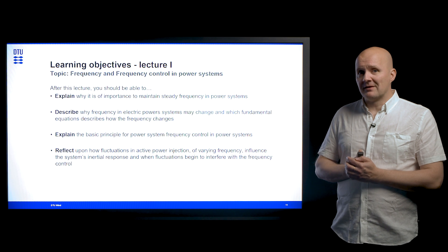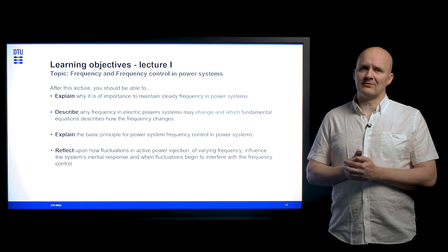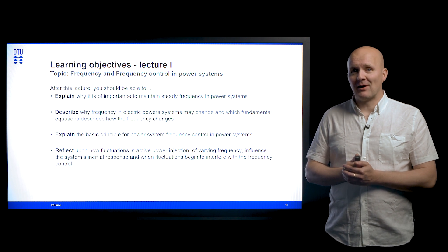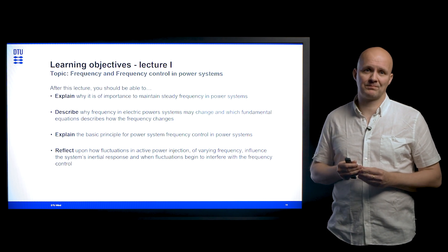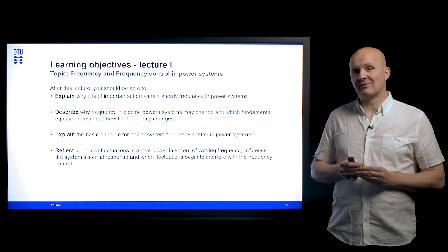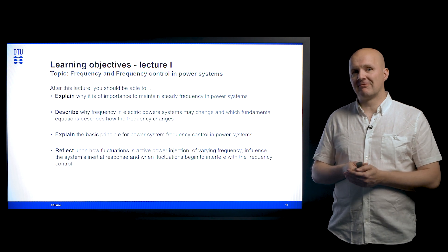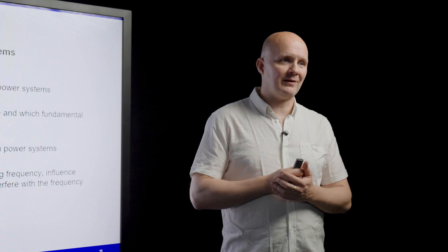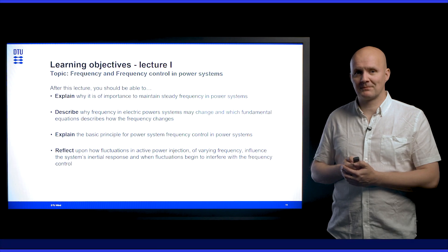At last, we revisit the learning objectives. After this lecture, you should now be able to explain why it is of importance to maintain steady frequency in power systems, describe why the frequency in electric power systems may change and which fundamental equation describes how the frequency changes. You should also be able to explain the basic principles of power system frequency control in power systems, and reflect upon how fluctuations in active power injections influence the system inertial response, and what characteristics the fluctuations need to have in order to begin to interfere with the frequency control. Thank you.